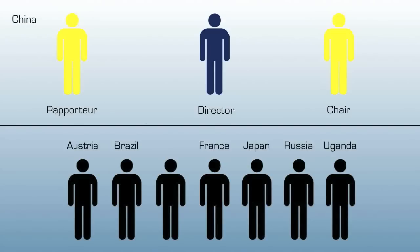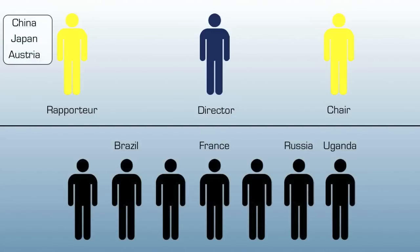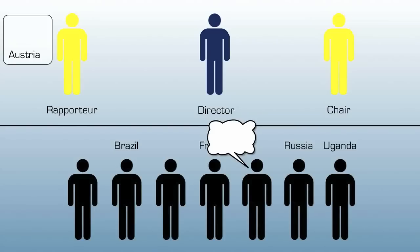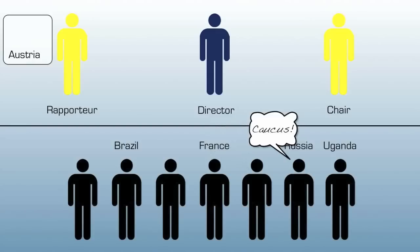A speaker's list is then established for the new topic. This is done by member states submitting their name to the rapporteur, who compiles them into a list and puts this list up for everyone to see. The chair will then hand the right to speak to the various countries in order of the speaker's list. A country is then removed from the speaker's list. However, Austria will be out of luck this time, as Russia motions for a caucus.